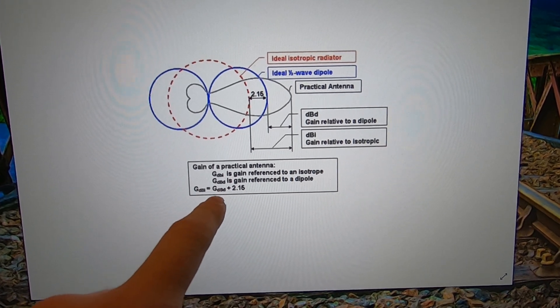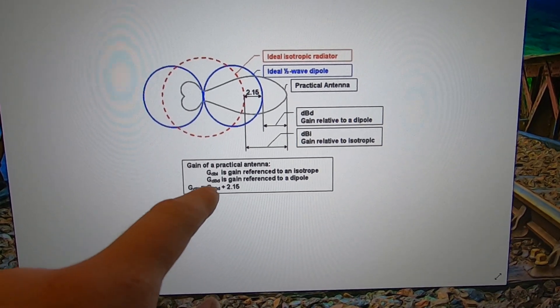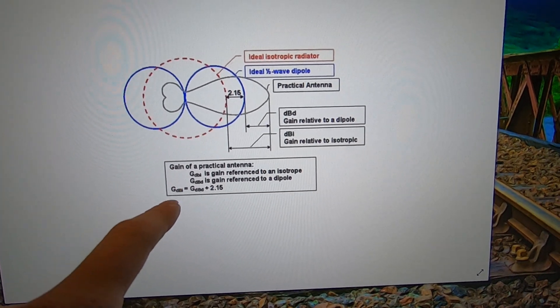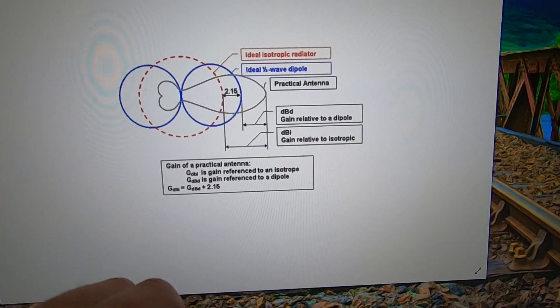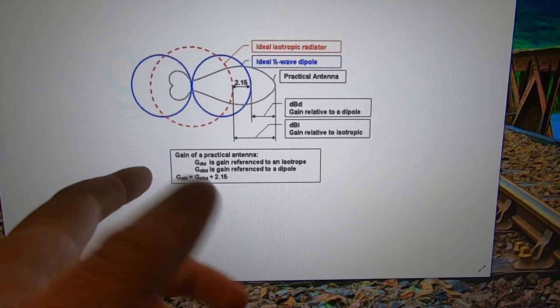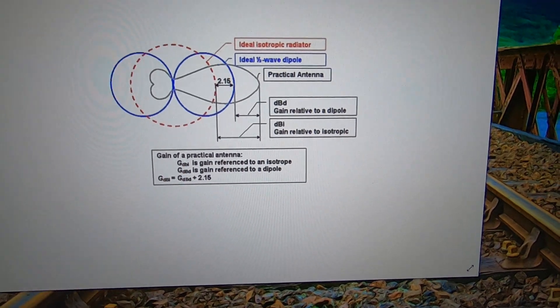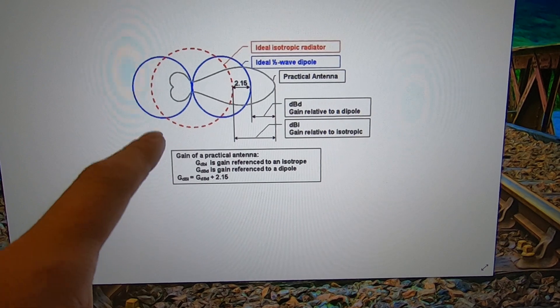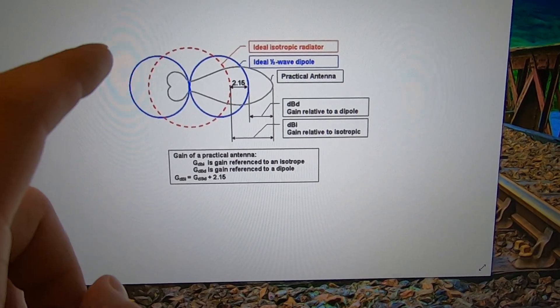dBi mostly you're going to see that on consumer stuff, and dBd you'll see more on commercial stuff, but sometimes that will switch back and forth. Just keep in mind that an 8 dBi gain antenna is the same as a 5.85 dBd gain antenna.